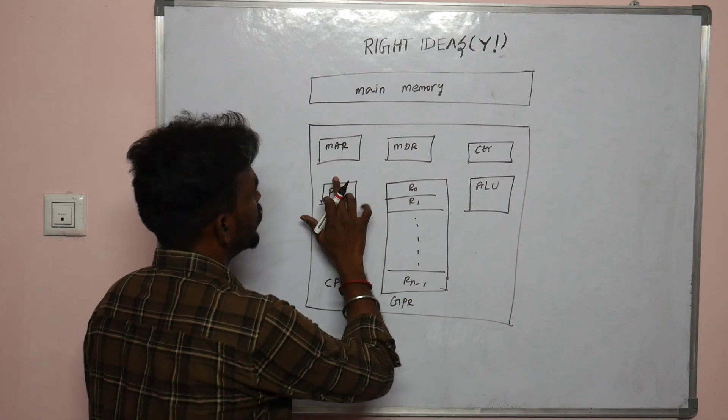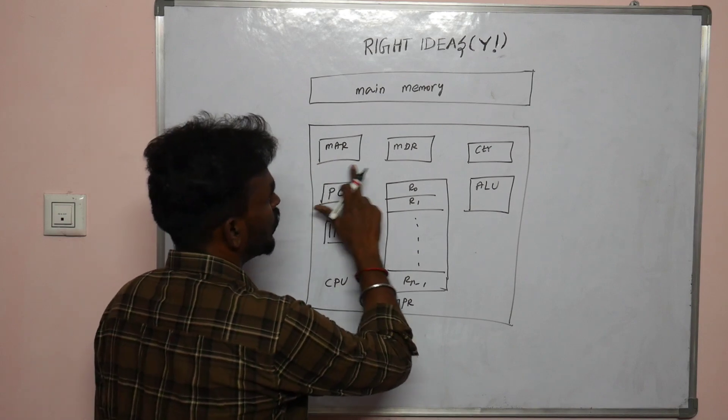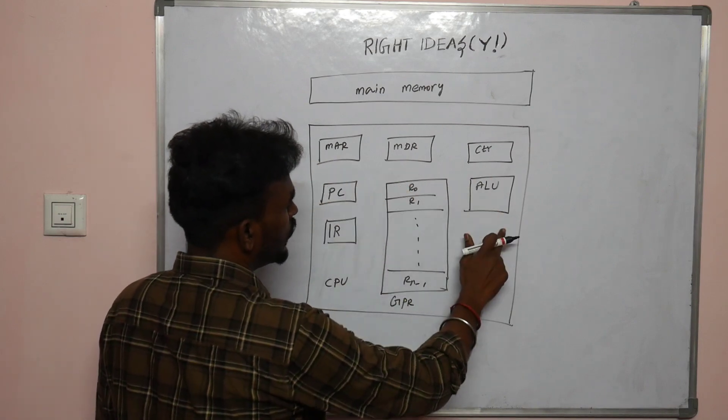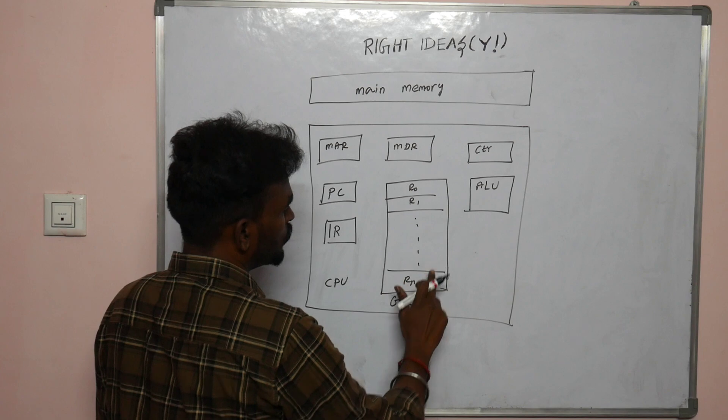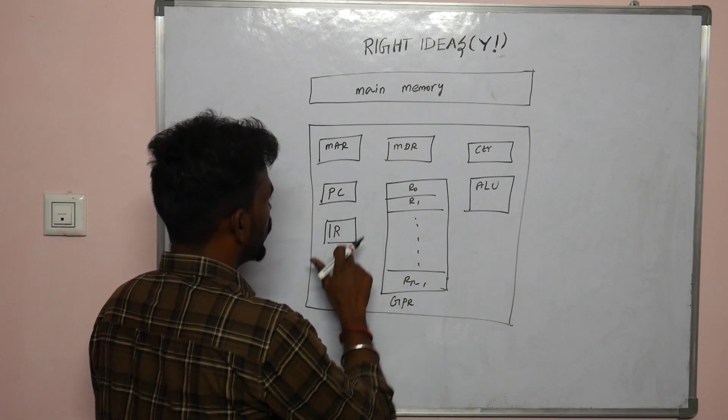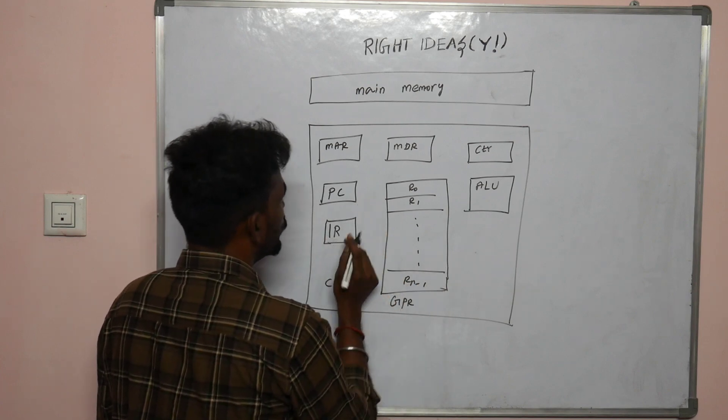So what are the system components? MAR, MDR, Control Unit, ALU, General Purpose Registers, IR, PC — all these devices make up the system.